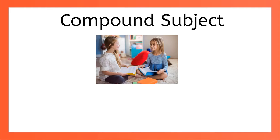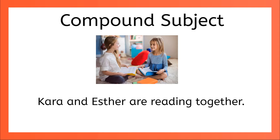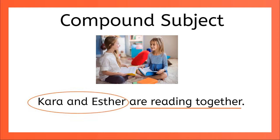Let's find the compound subject in this sentence: Kara and Esther are reading together. I know that are reading together is the predicate — it contains the verbs are and reading — so that makes Kara and Esther the subject. It's a compound subject because the sentence is about two people and their names are joined with the coordinating conjunction AND.